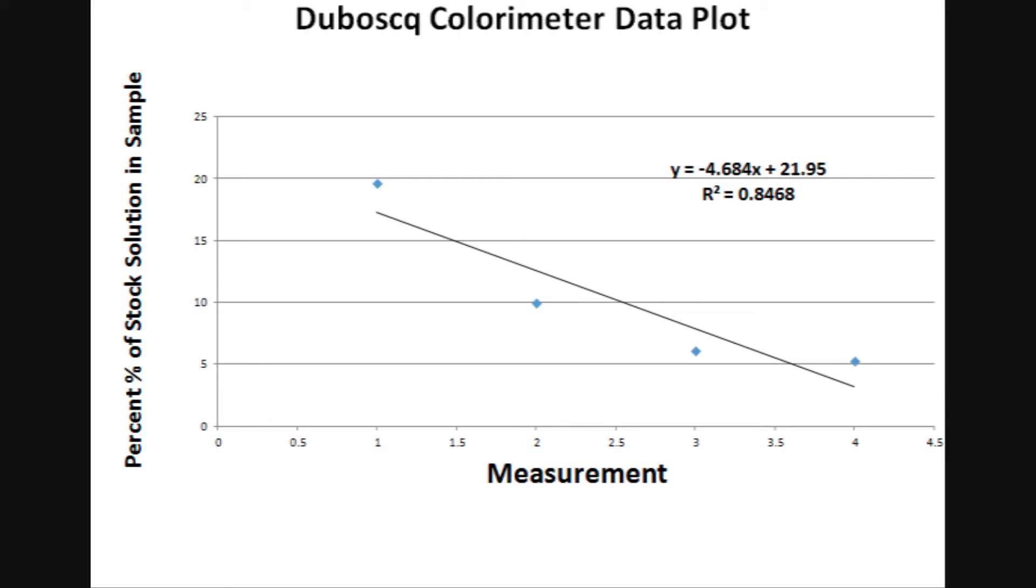Now, if you look down, we have 19.6, 10, 6.06, and 5.3. And as you can see here, for being 158 years old, at a rational line about 84%. That's not bad for being pretty darn old and no calibration.